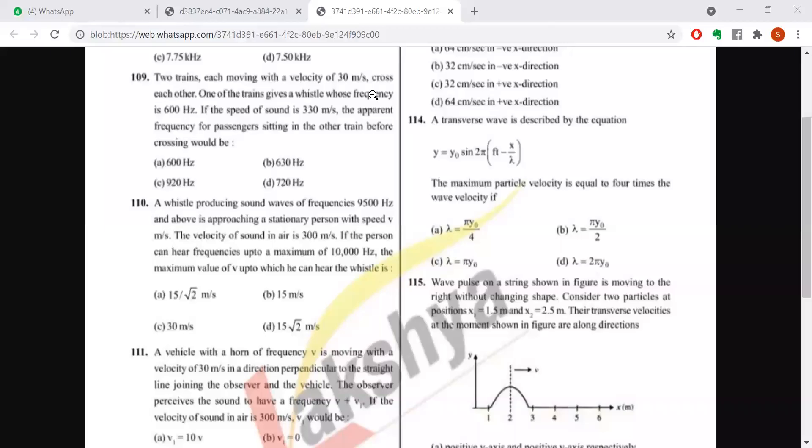Question number 114. Transverse wave is described by the equation y = y₀ sin(2πft - 2πx/λ). Maximum particle velocity is equal to four times the wave velocity.